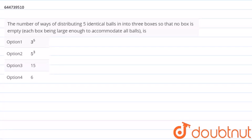We need to find the number of ways of distributing five identical balls into three boxes so that no box is empty. Each box is large enough to accommodate all the balls.